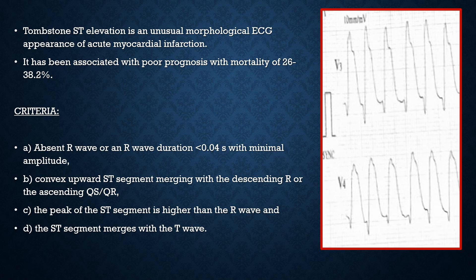You should keep polymorphic VT in mind whether the patient is going to the cath lab or not. Now let's discuss the criteria for making this diagnosis. Criterion one: absent R wave — there is no R wave, only Q wave formation. If there is an R wave, it should have a duration of less than 0.04 seconds. In this case, there was no R wave, so this criterion is met.